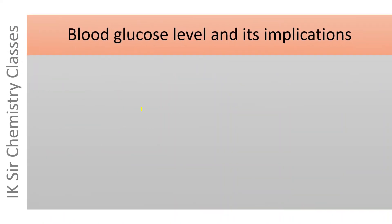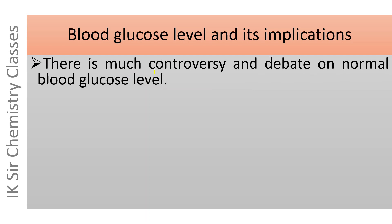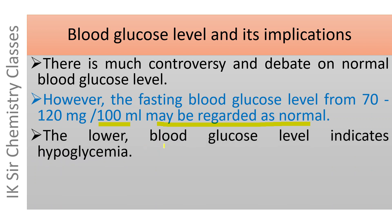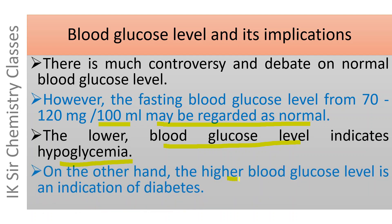Blood glucose level and its implications. There is much controversy and debate on normal blood glucose level. However, the fasting blood glucose level from 70 to 120 mg per 100 ml may be regarded as normal. The lower blood glucose level indicates hypoglycemia. On the other hand, the higher blood glucose level is an indication of diabetes.